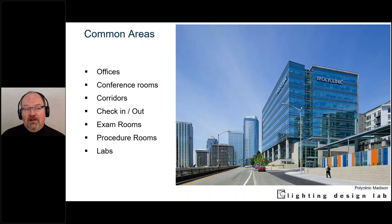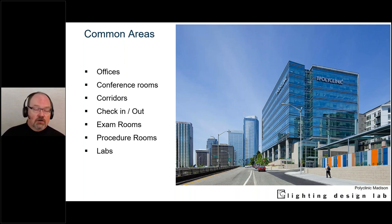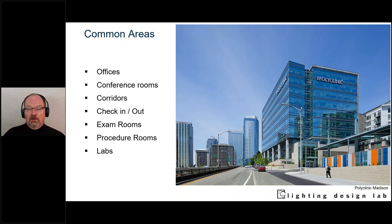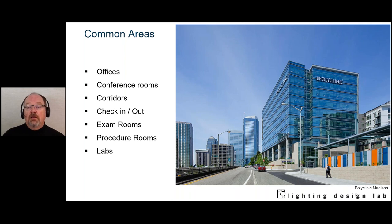When we think about these kinds of spaces, they're all going to have offices, conference rooms, corridors, and some kind of check-in/check-out desk. There may be exam rooms, procedure rooms, and labs. Whether we're talking about Children's Hospital, the Polyclinic in downtown Seattle, or a clinic in Red Lodge, Montana, there are commonalities that we can address.